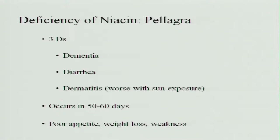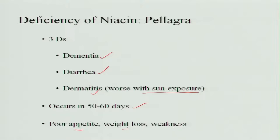Deficiency of niacin leads to a disease called pellagra, also called the 3D disease — or sometimes 4D. The three Ds are dementia, diarrhea, and dermatitis. The dermatitis is skin rashes that become worse when the body is exposed to sunlight. Symptoms develop over 50 to 60 days and include poor appetite, weight loss, and weakness. The 4th D is death, when niacin deficiency is not properly treated.